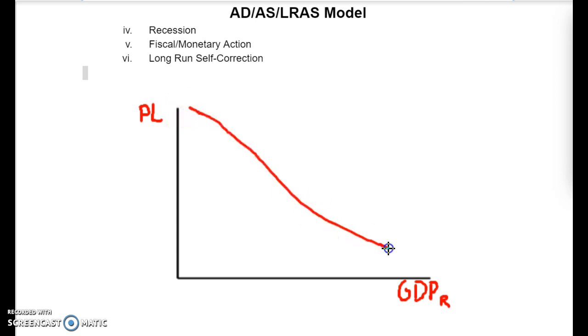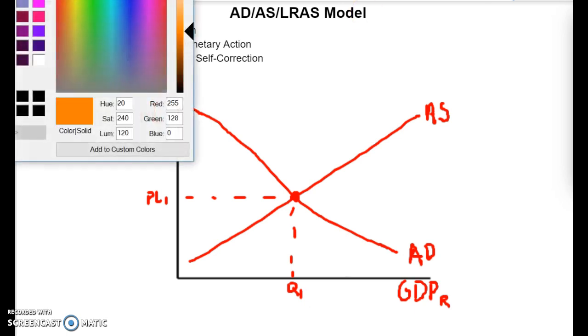I'm going to have my downward-sloping aggregate demand curve. Yours is probably going to look a little straighter than mine because writing with a mouse is hard. I'm going to have my upward-sloping supply curve. I call this AS. Sometimes they tell you to label this SRAS for short-run aggregate supply. So just make sure you follow the instructions if they change that. Then I'm going to dash over here and get my original PL. I'm going to call this PL1, sometimes called PLE for equilibrium price level. Dash down, and this is going to be my Q1, or they love using Y here.